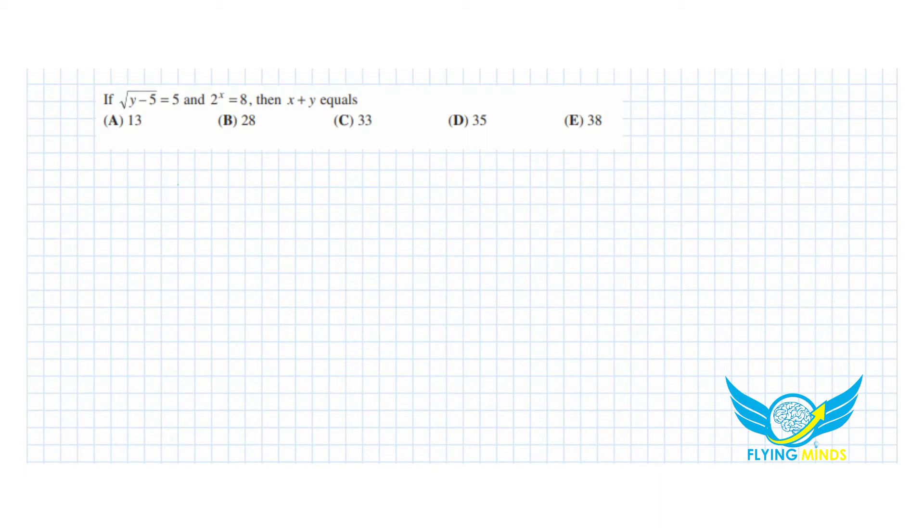So it's really easy question. We need to find sum of x and y. So to find sum of x and y, we need to find y and we need to find x from what we have from the two equations that we are given.